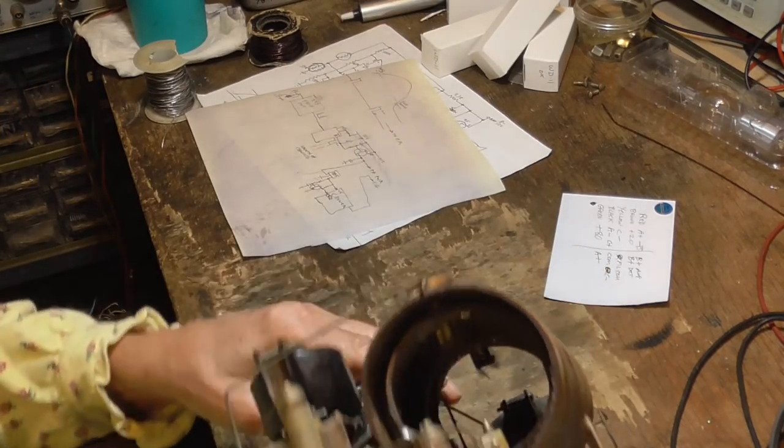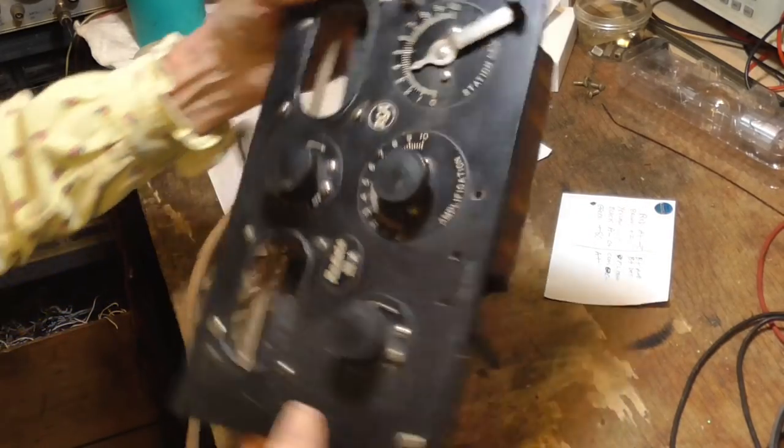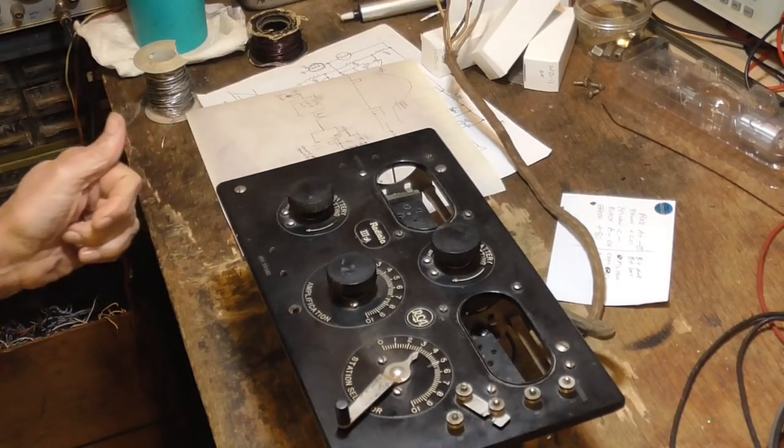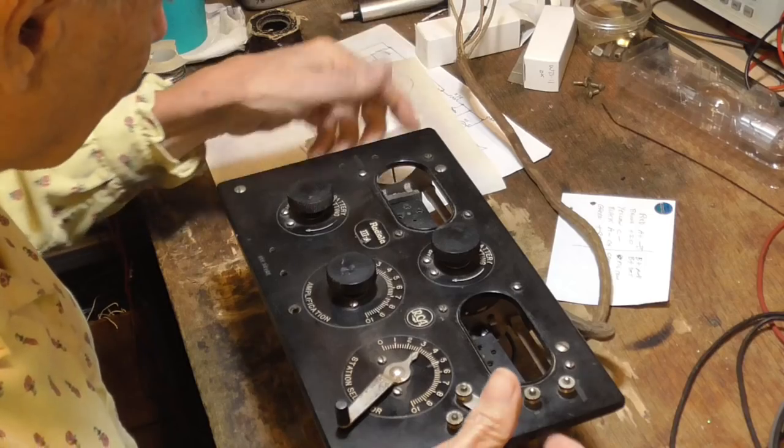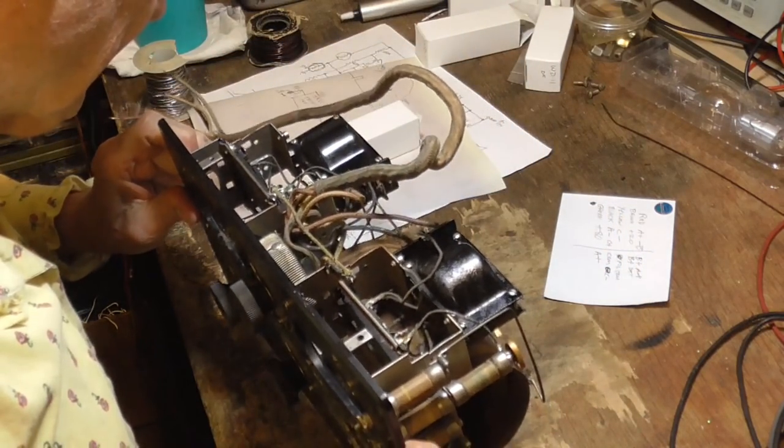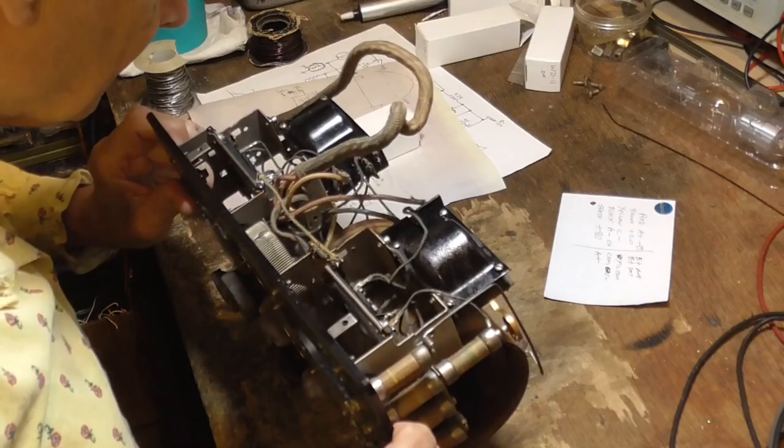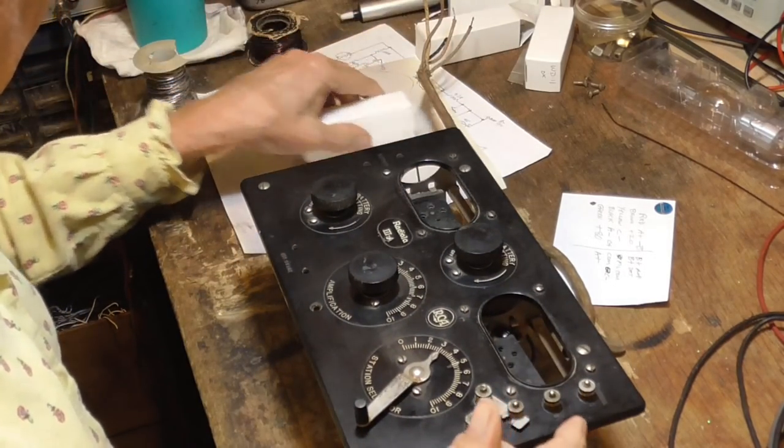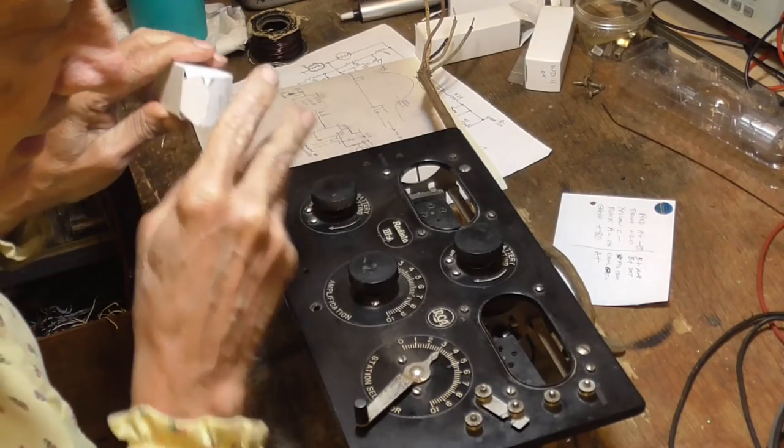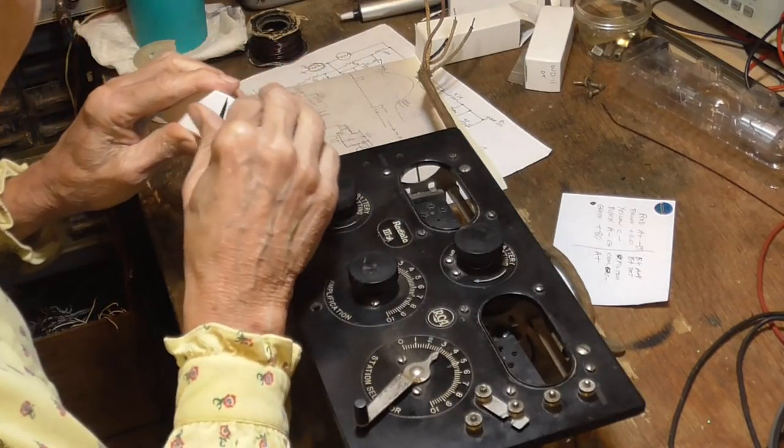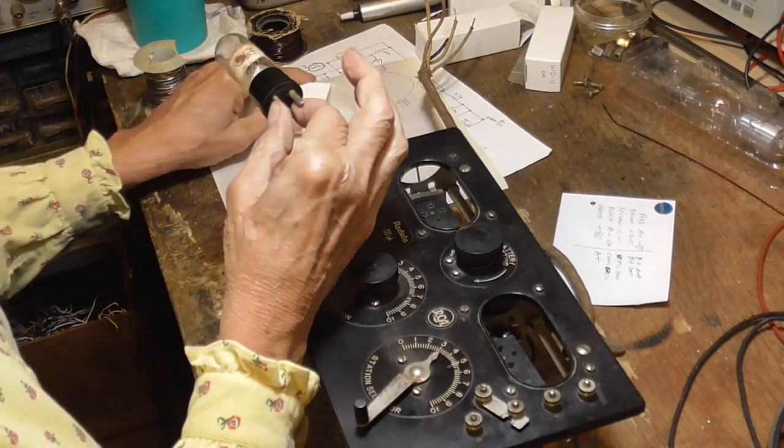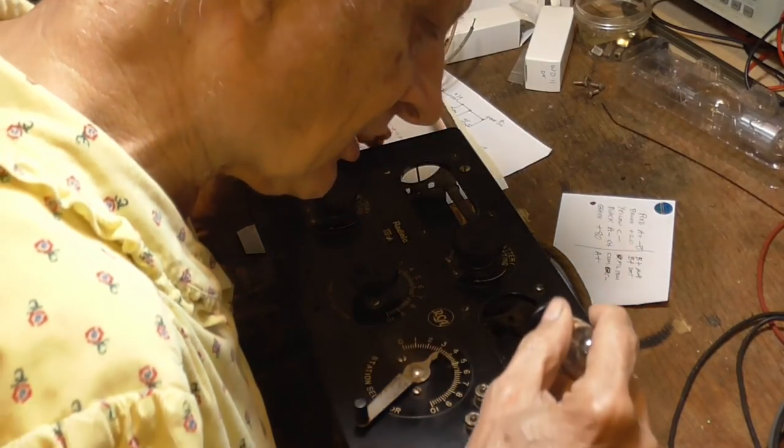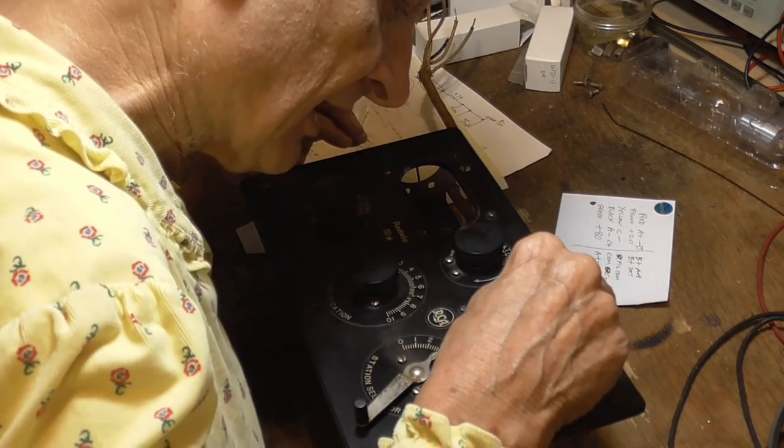Next thing to do, we'll put some tubes in it. Connect up to power supplies. The output tube is there, so this one over here is going to be the regenerator. That's the original. I'm going to put that one in the regeneration, highest gain.